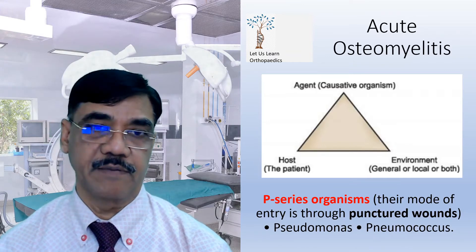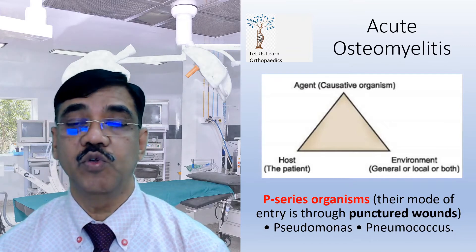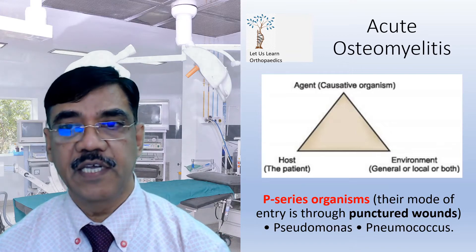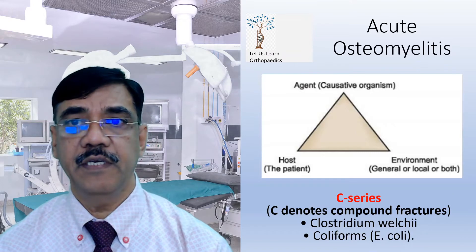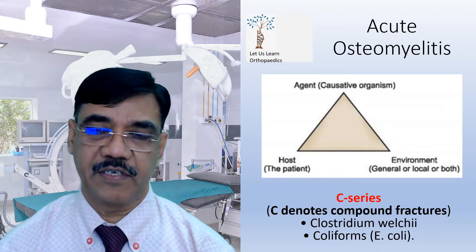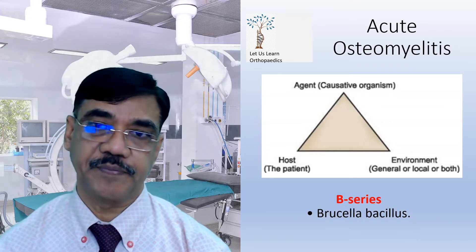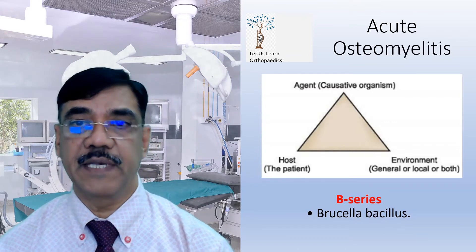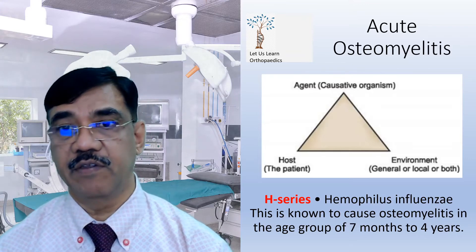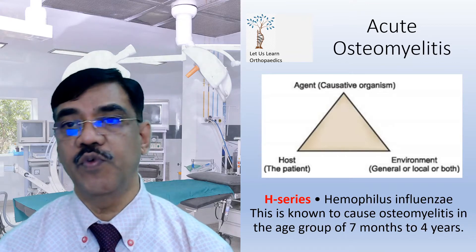Then there are P-series organisms. Their mode of entry is through punctured wounds, and they include Pseudomonas and Pneumococcus. The C-series organisms — where C denotes compound fractures — include Clostridium, fungi, and coliforms (i.e., E. coli). Then B-series: Brucella bacillus. And H-series: Haemophilus influenzae, which is known to cause osteomyelitis in the age group of 7 months to 4 years.